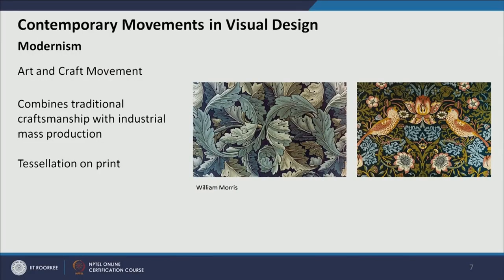The arts and crafts movement incorporated the benefits of industrial mass production for faster production rates while also incorporating craftsmanship — the aesthetic quality and visual language of artisans and traditional forms.